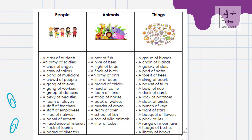Now we have things — objects that are neuter; we don't know male or female, but we can have them in a collection. So we have a group of islands or a chain of islands. The group of islands in the Caribbean can also be called a chain of islands — the Caribbean is a chain of islands.